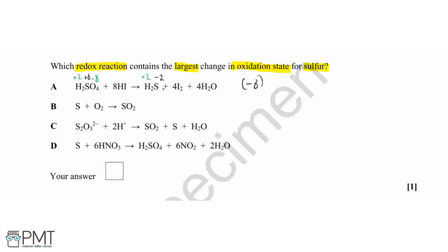In equation B, our sulfur will just have an oxidation state of zero because it's in its elemental form. And then on the right-hand side with the sulfur dioxide, we've got two lots of minus two from the oxygen, giving minus four. Therefore, the sulfur will need to be in oxidation state plus four. So our change with this one is going to be plus four.